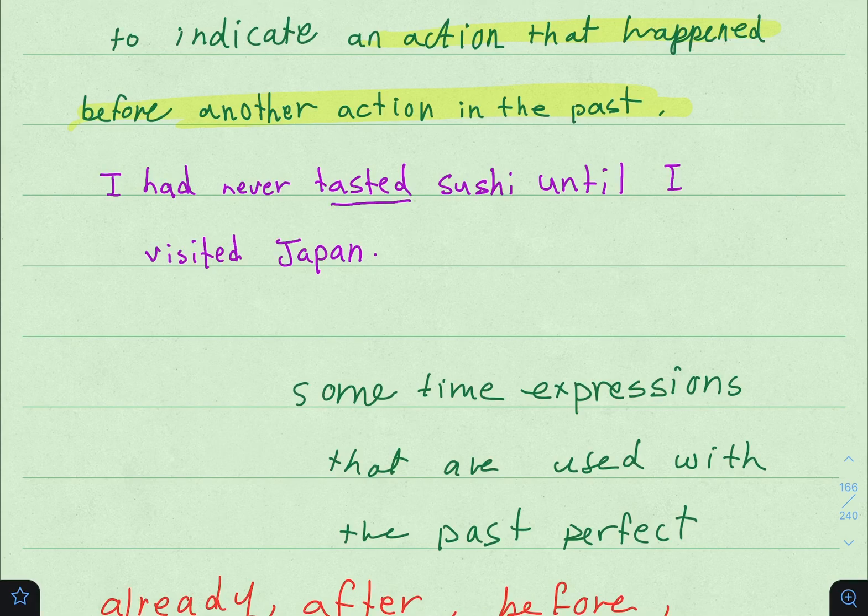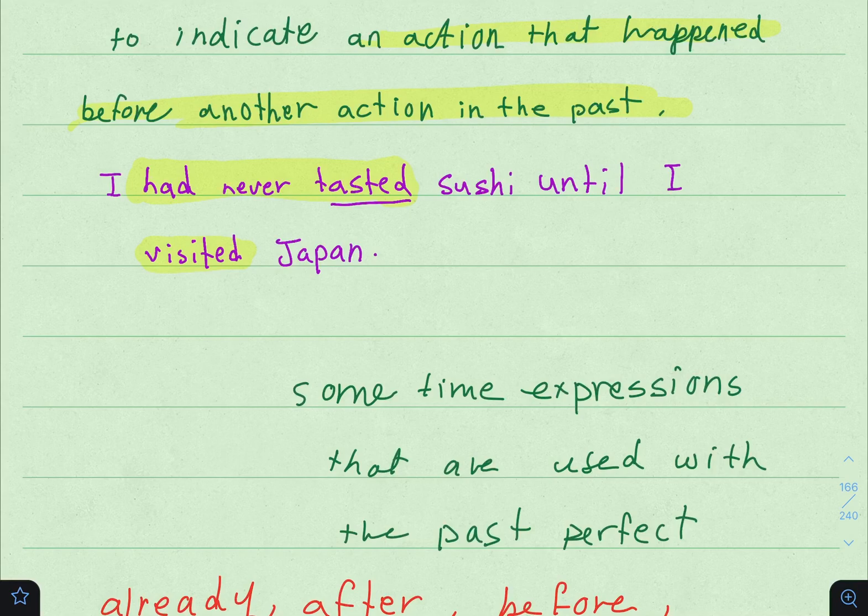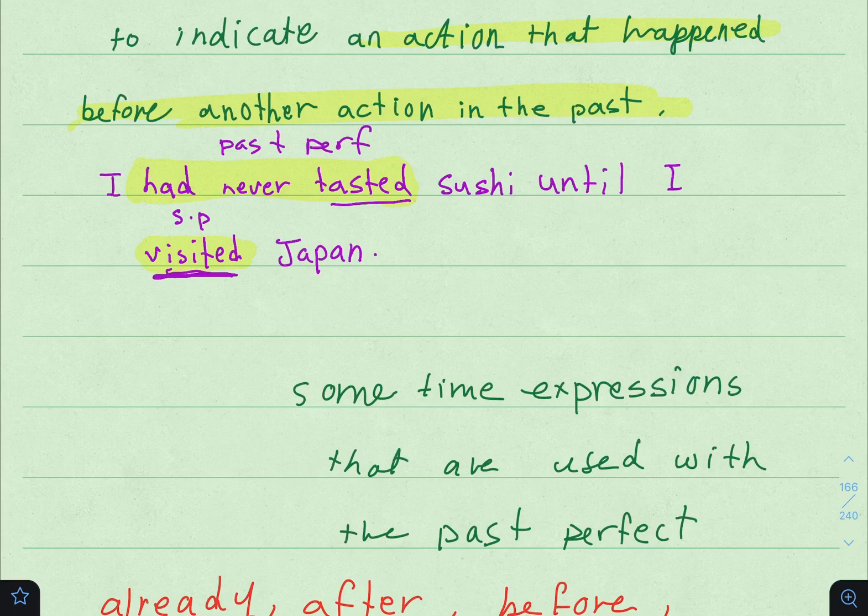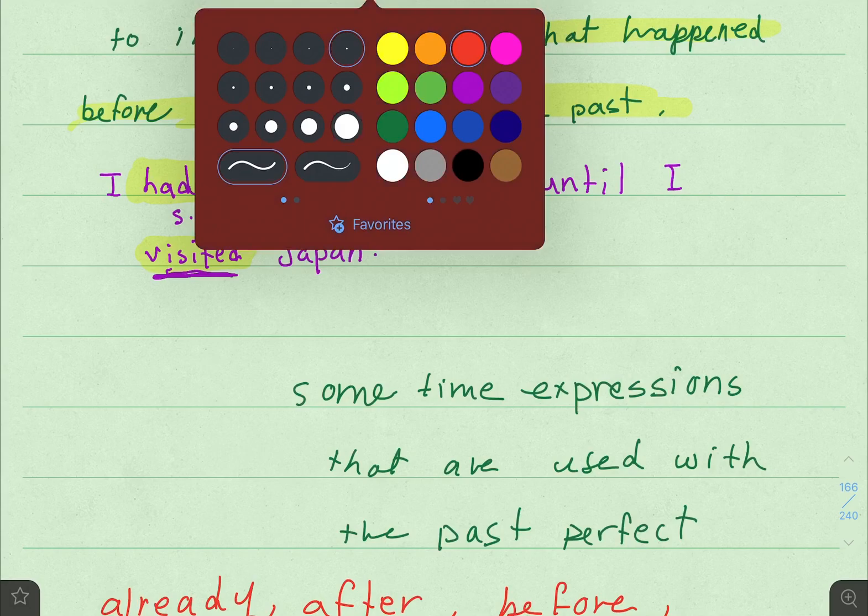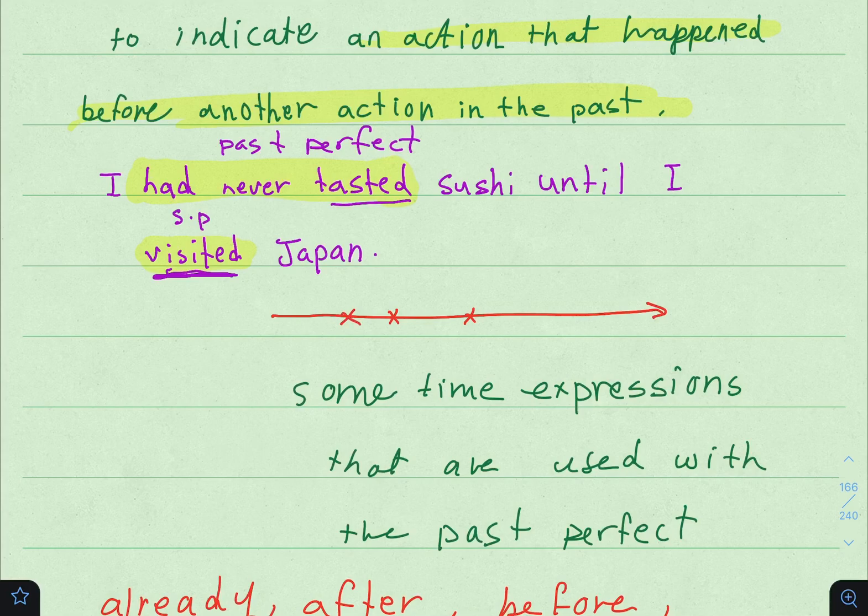How many actions do we have? كم حدث؟ We have two actions. The first is 'had never tasted', which is Past Perfect. The second is 'visited', which is Simple Past - الماضي البسيط.